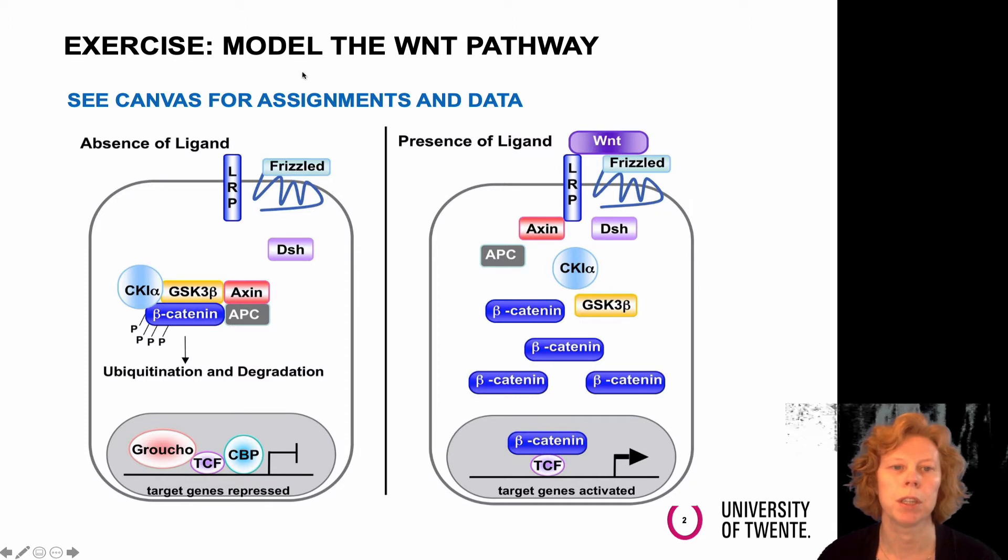So you were asked to construct an animal model of the WNT signaling pathway. On canvas you could find these images. I explained in the previous movie, so the kind of part 1 of the assignment solution.